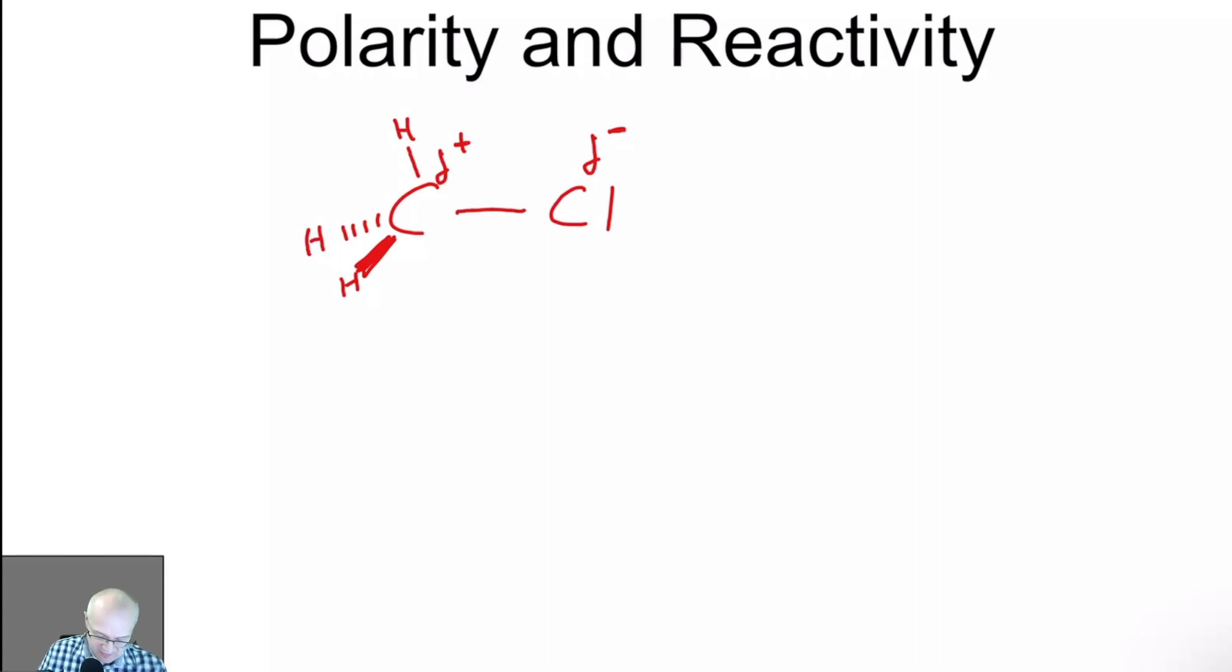You have to understand that the delta-positive carbon will attract negative things, such as a nucleophile, for example, such as anything that's negative. Anything with a negative or a partial negative charge will be attracted to this carbon. Anything with a negative or a partial negative charge will be repelled by this chlorine. So that's important. In order for a negative thing to react with a positive thing, they first must collide.